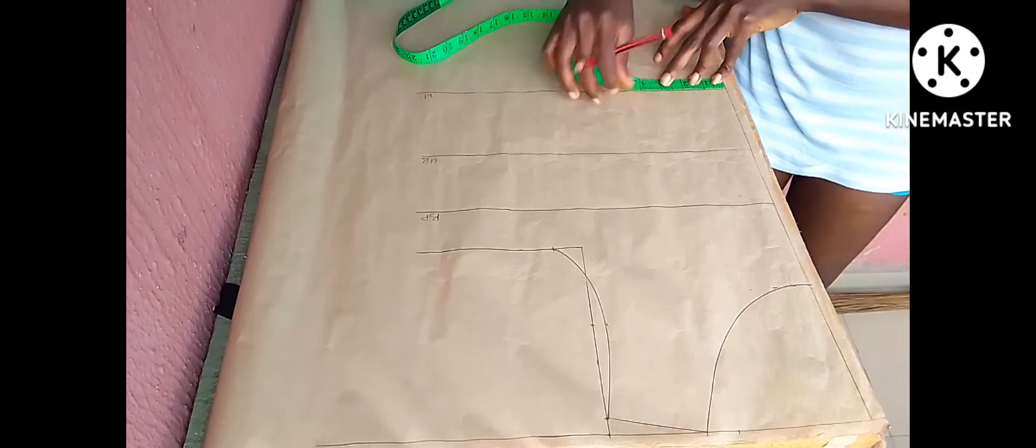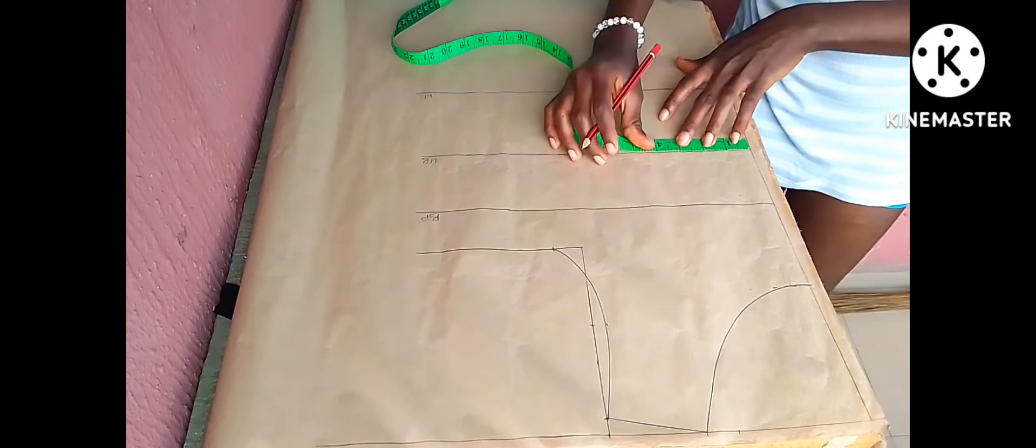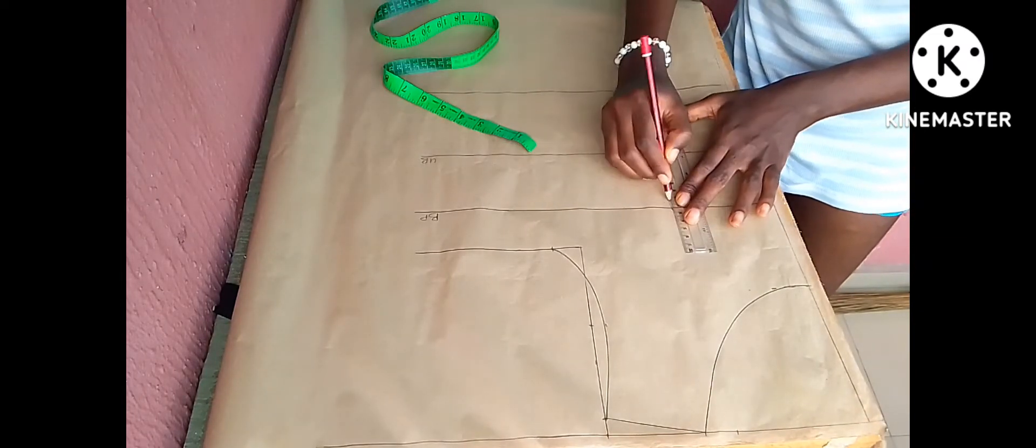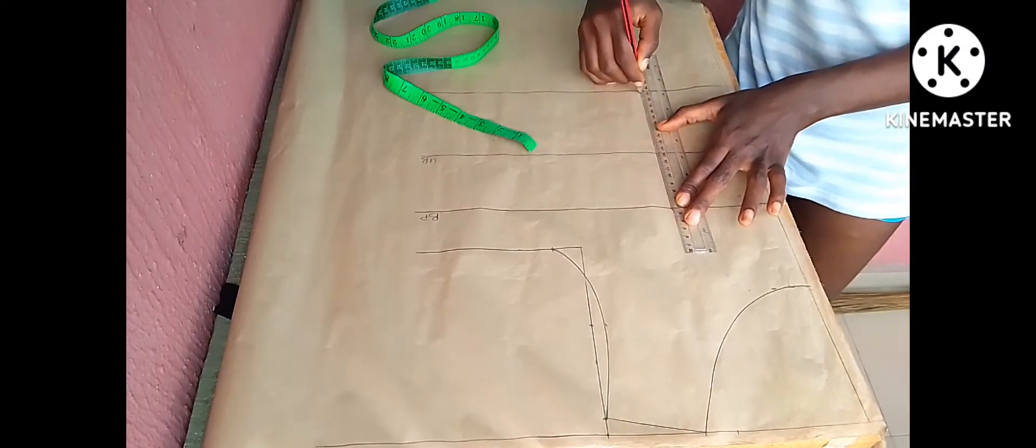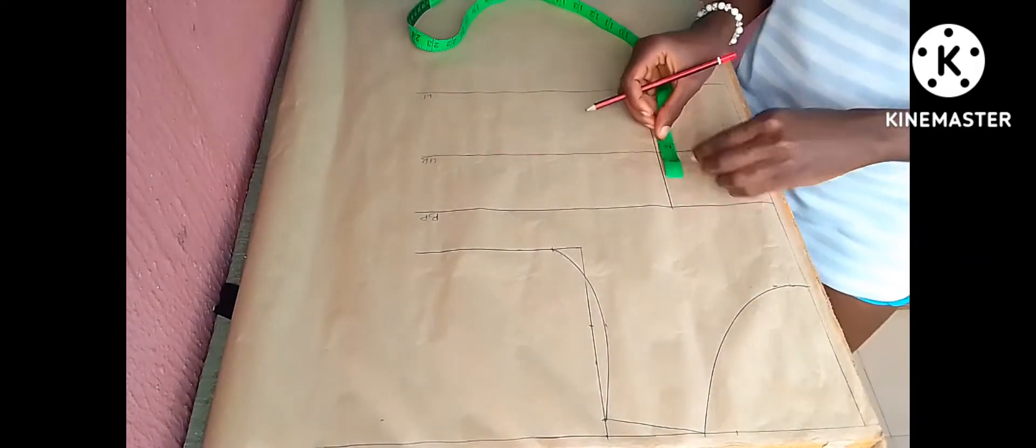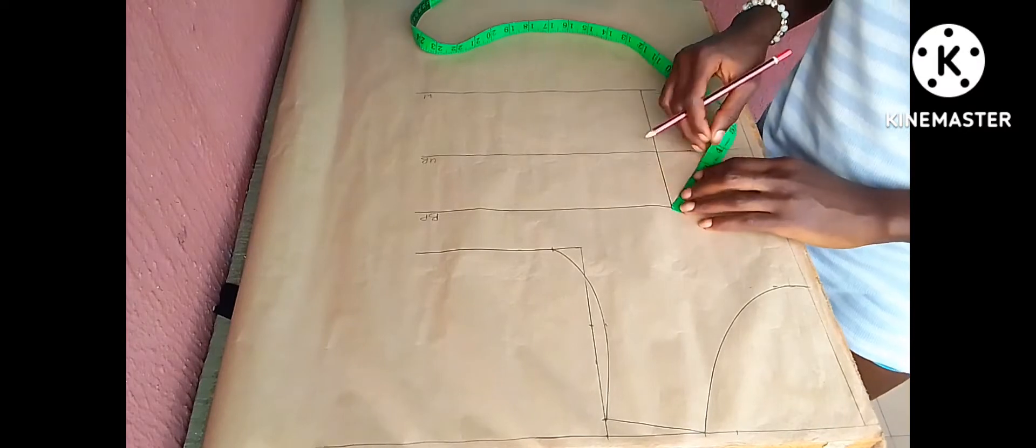Now I'm trying to place my nipple to nipple measurement. My nipple to nipple measurement is 7 divided by 2, 3.5 plus half inch. So that is what I'm marking at my waist point, my underburst and my bust point and I roll the line across it.